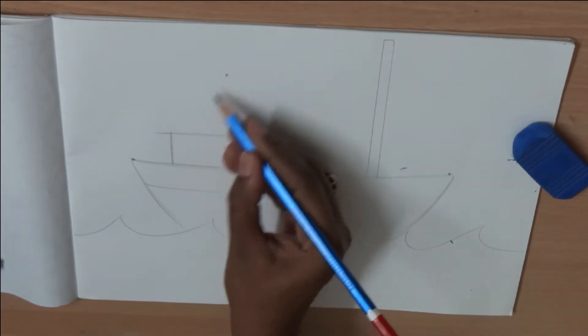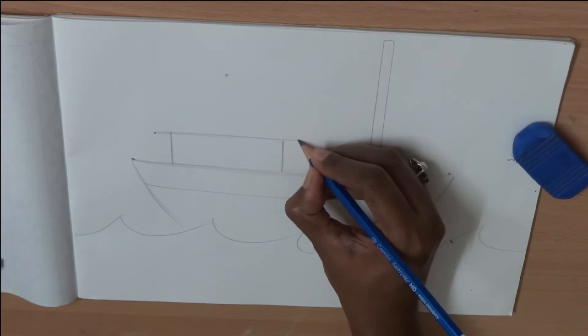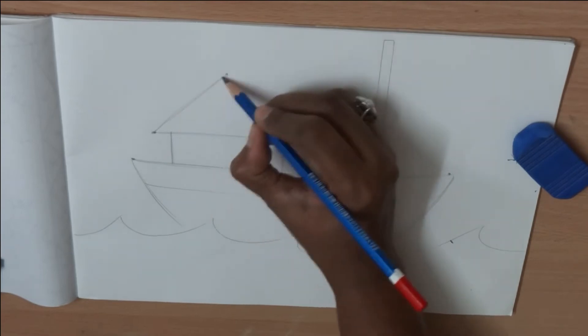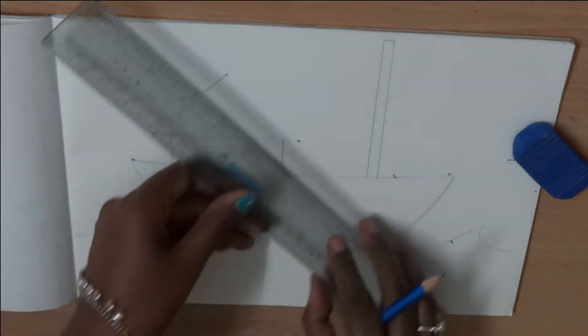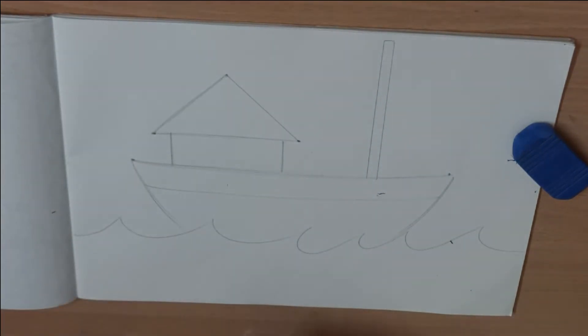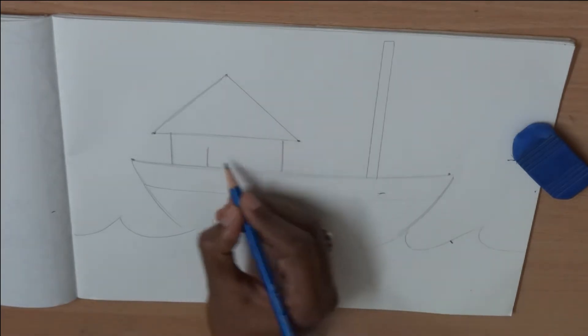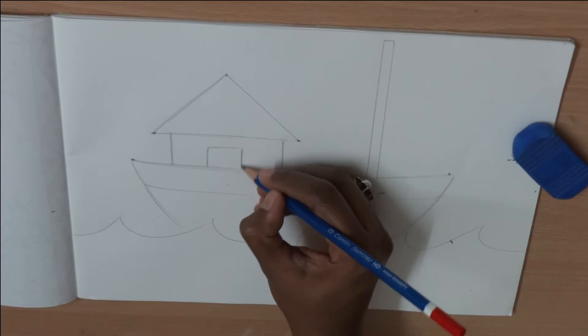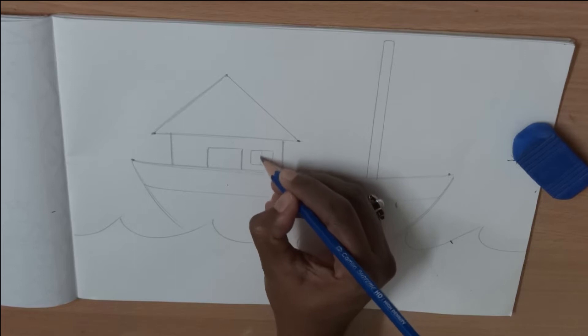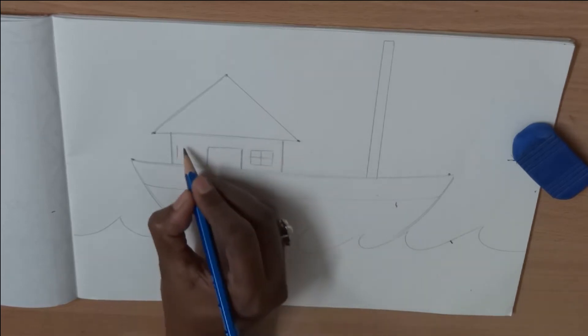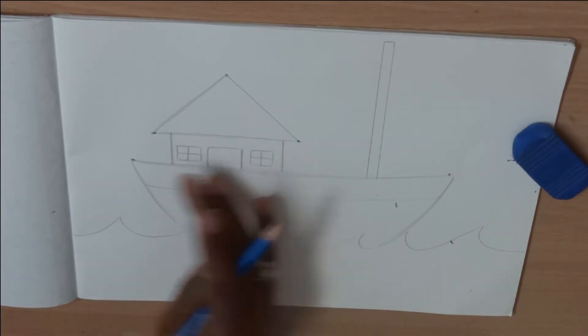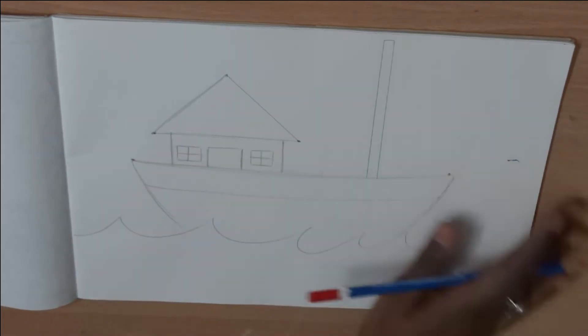Now make a dot in the middle and now join the sides, like alphabet A. You can use your scale also. Try to draw freehand. If you are not getting it straight, you can use your ruler. What is missing? Now draw a curved line, one door and two windows. That is it. A house is ready.